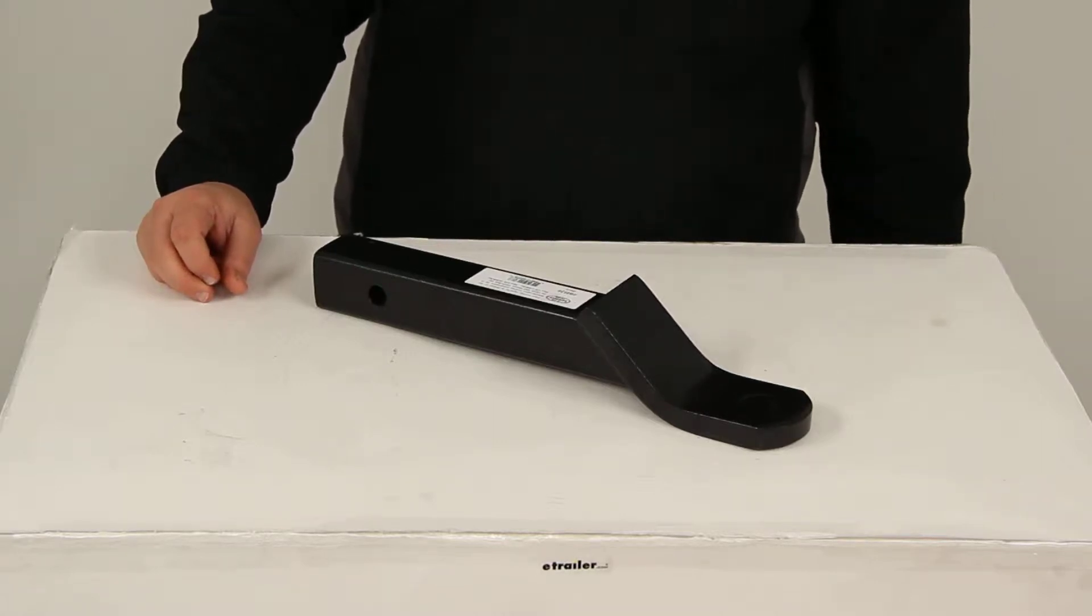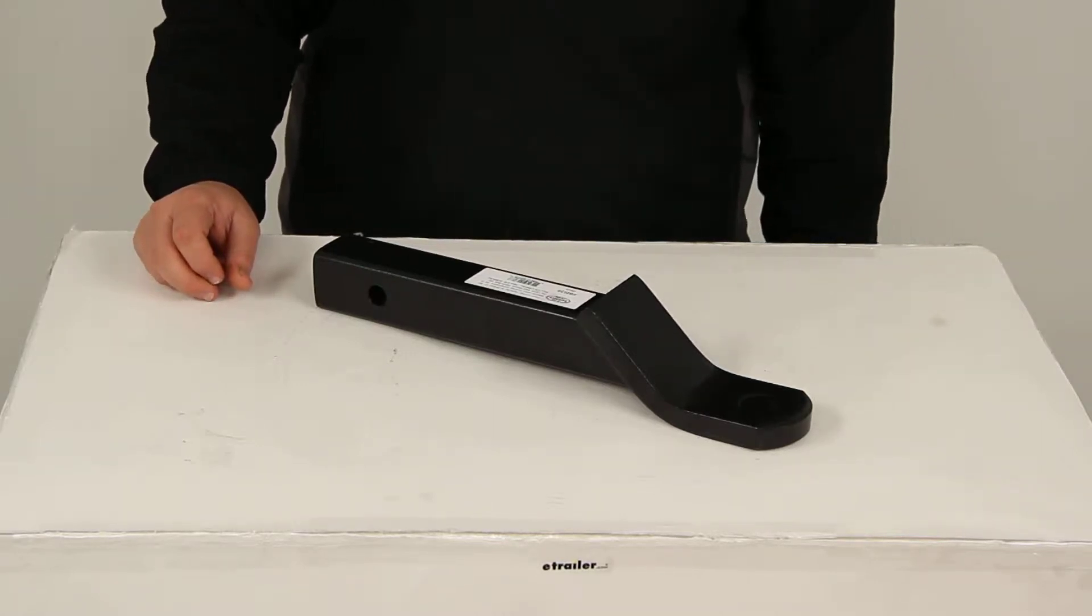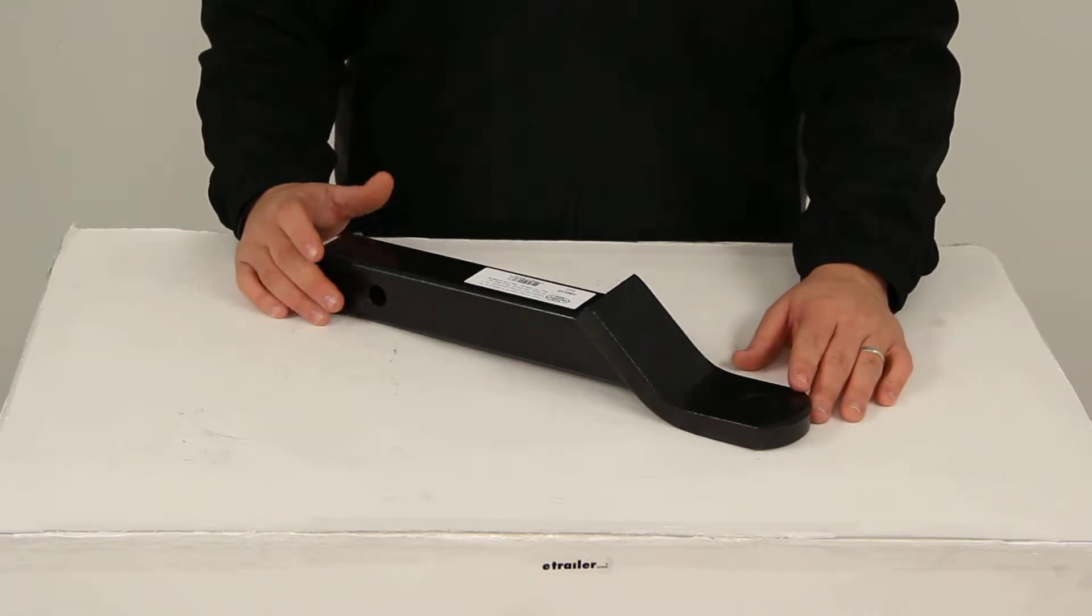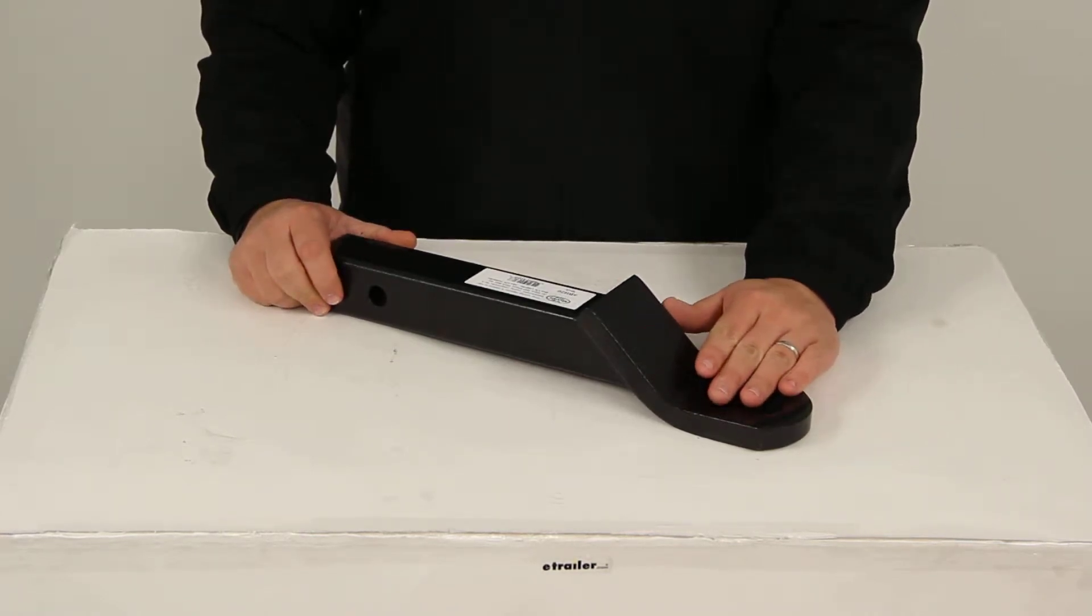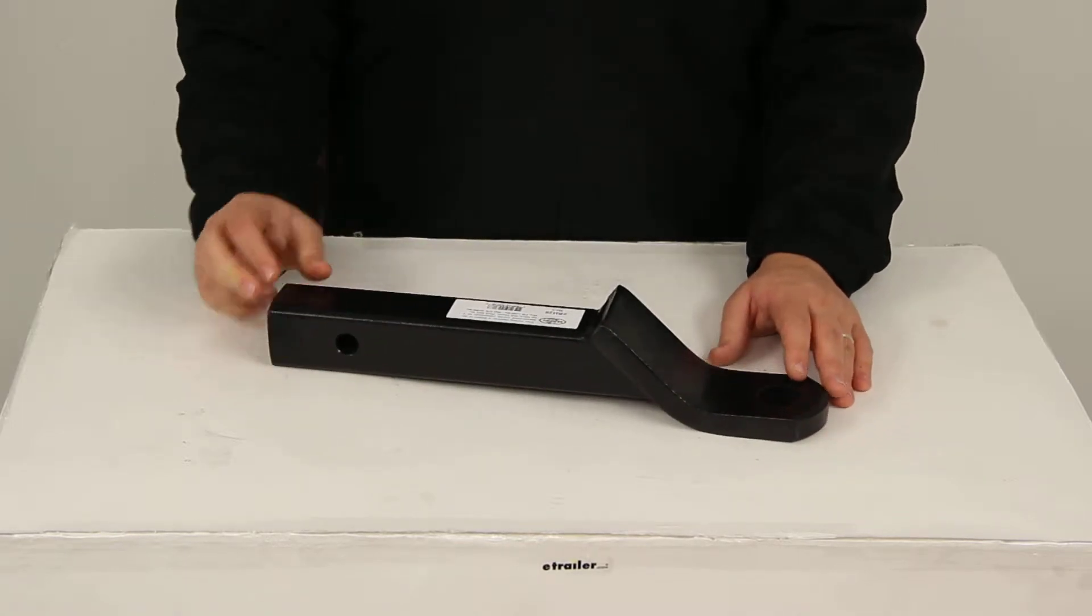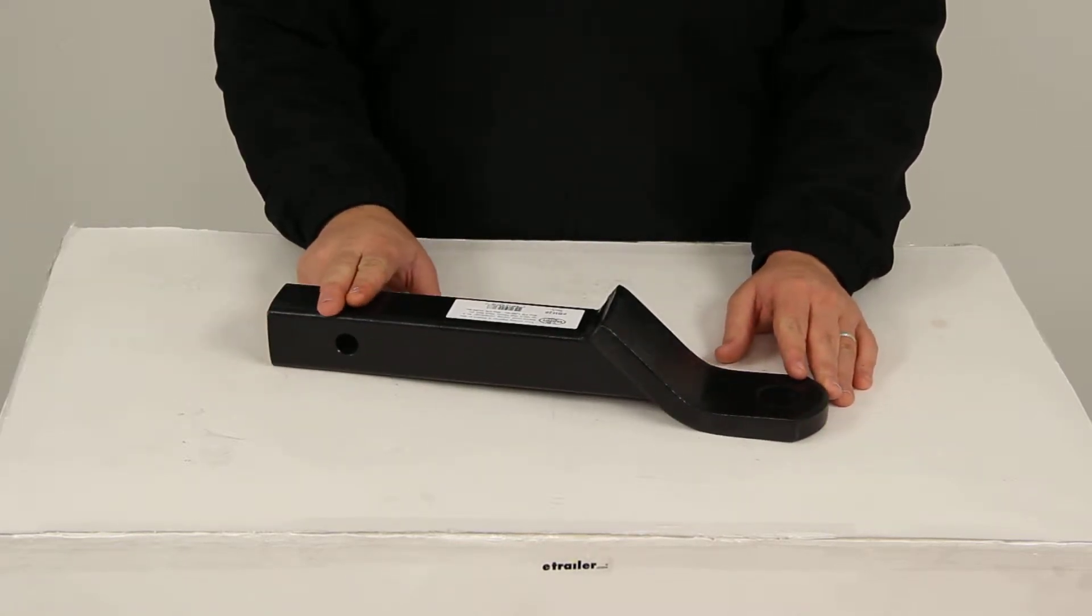Today we'll be reviewing part number BH20. This is the Brophy Heavy Duty Extra Long Ball Mount rated at 10,000 pounds. It's going to give us a tongue weight capacity of 1,000 pounds. It is designed to fit a 2 inch by 2 inch trailer hitch receiver.